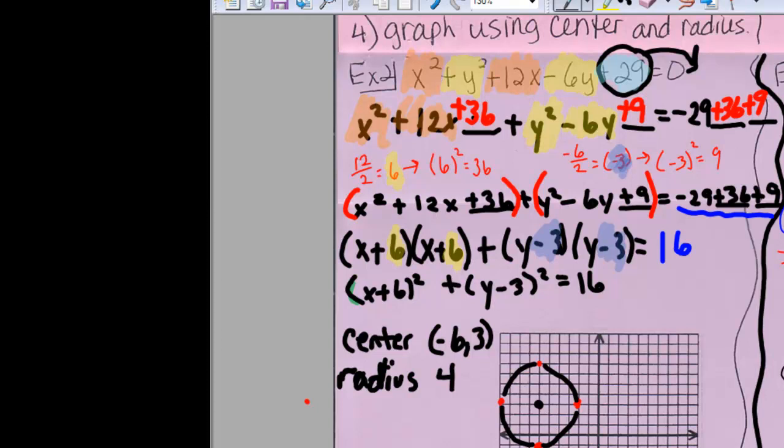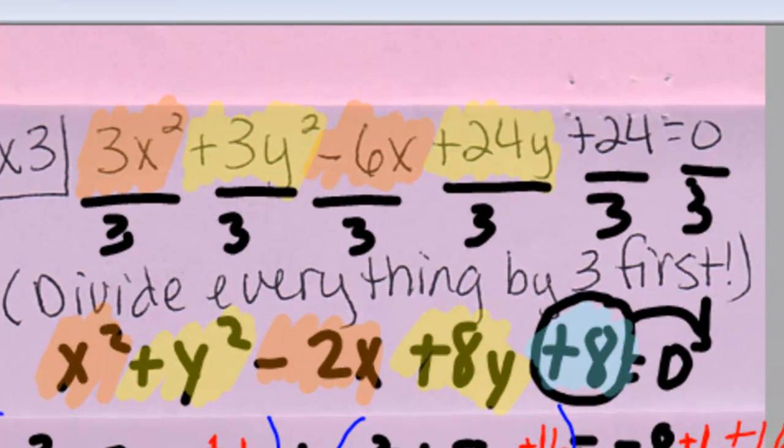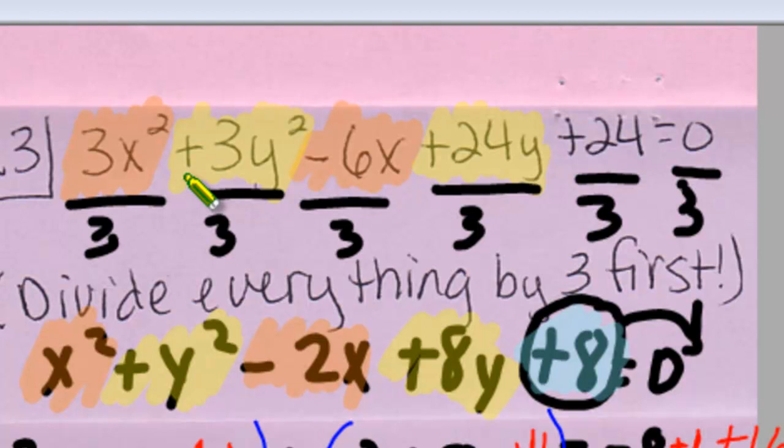Okay, let's look at example 3. In example 3, I have 3x squared plus 3y squared minus 6x plus 24y plus 24 is equal to 0. The first thing I want to do is divide everything by 3. And then I have x squared plus y squared minus 2x plus 8y plus 8 equals 0.